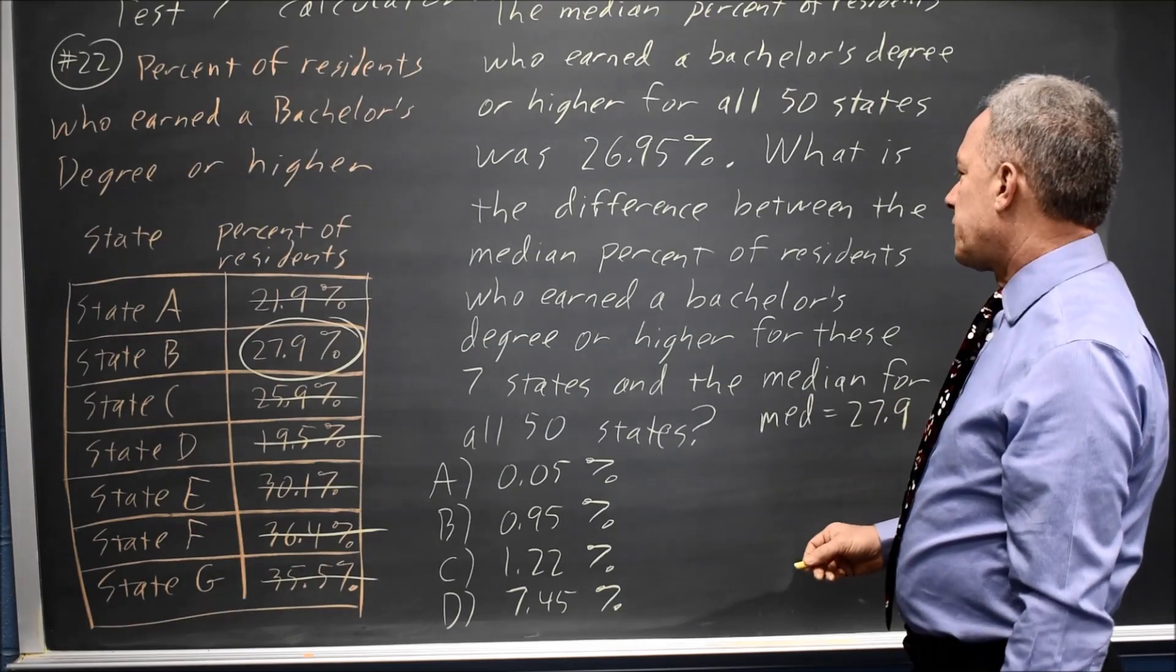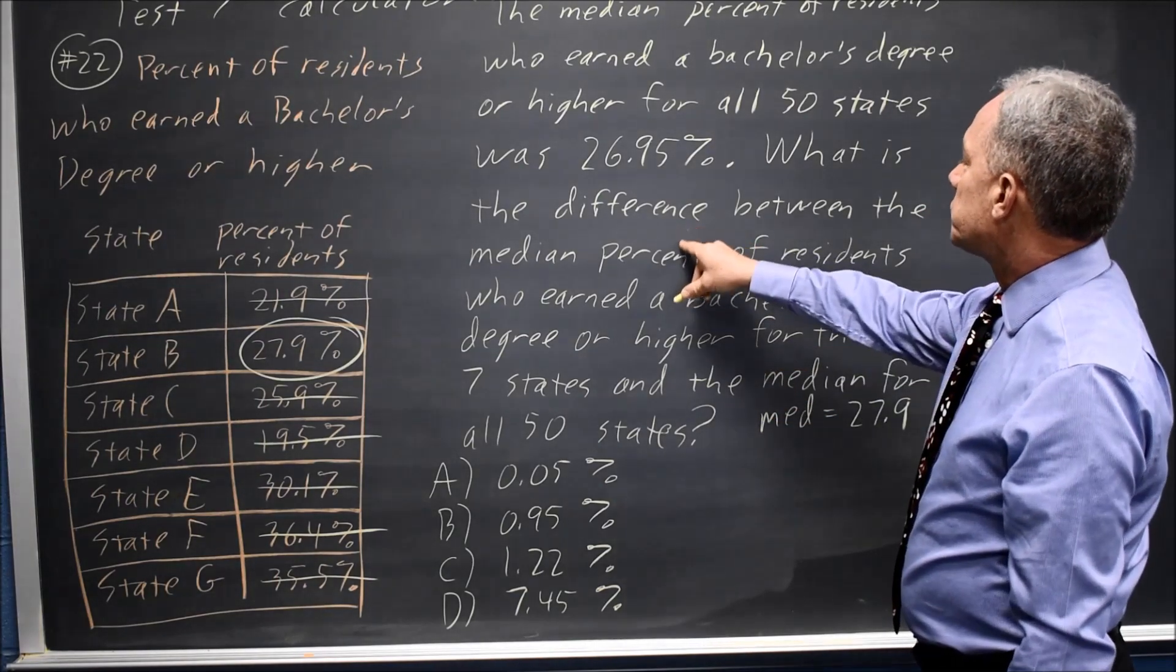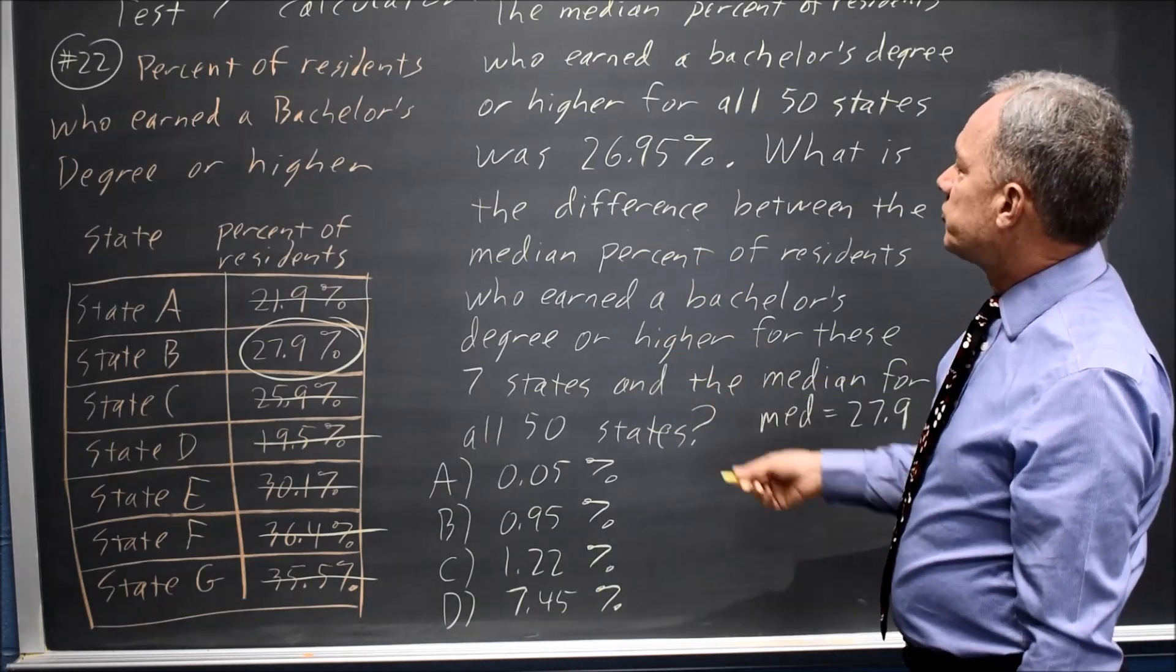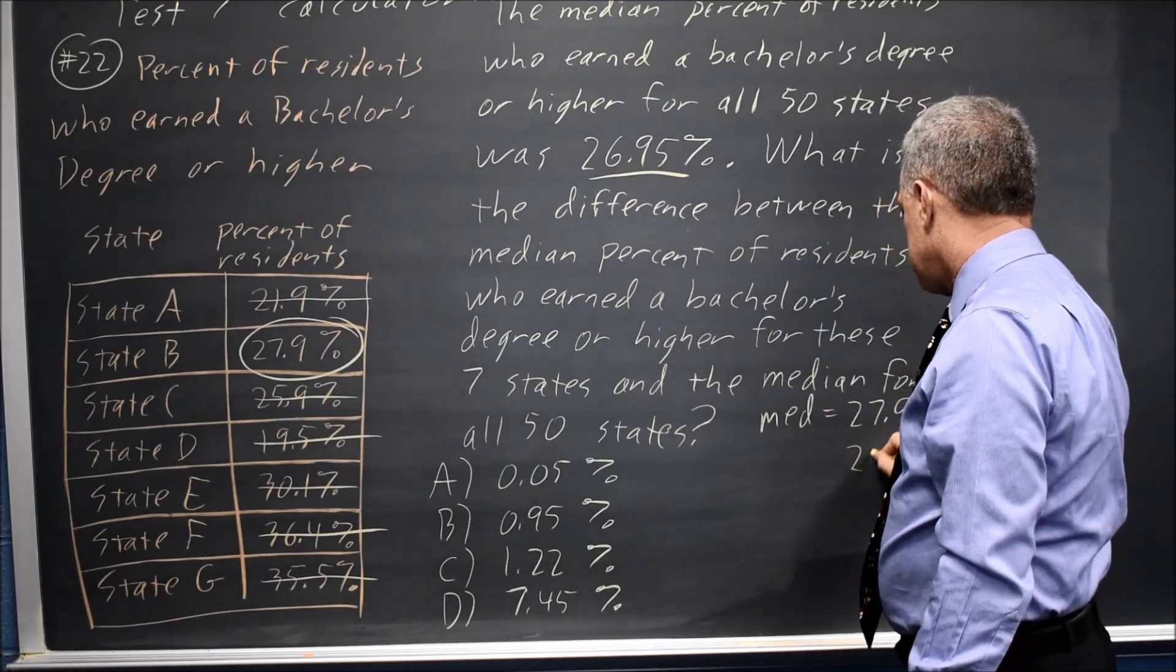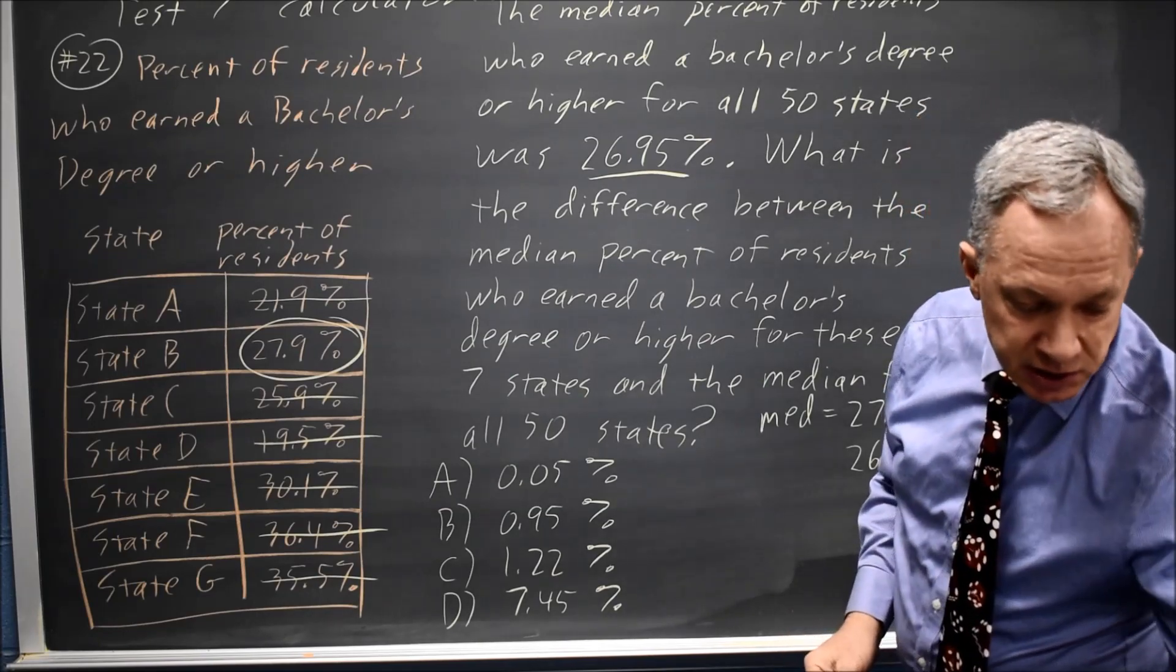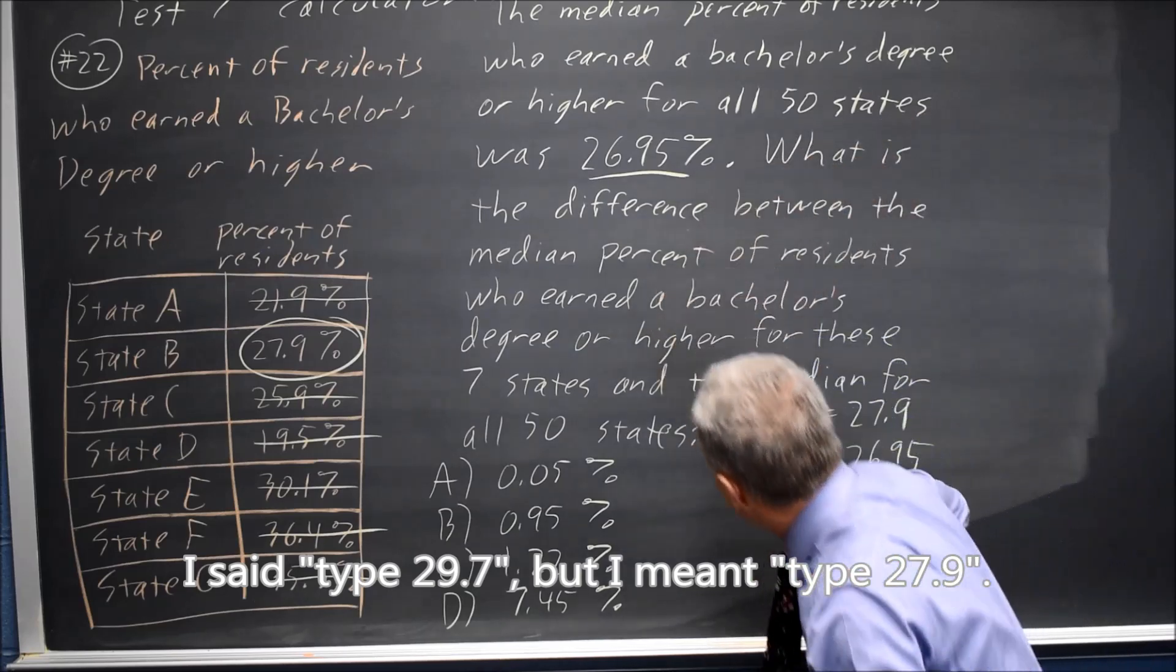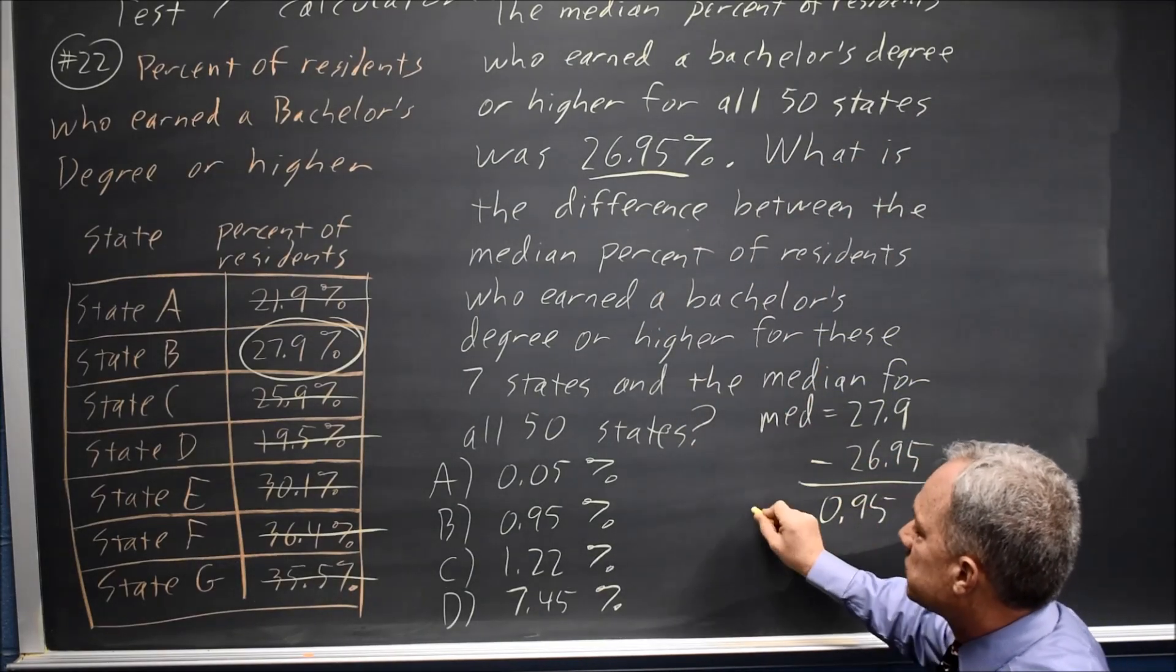College Board is asking for the difference between the median for these 7 states and the median for all 50 states, which was 26.95. This is a calculator question, so I can just type 27.9 minus 26.95, and I get 0.95, which is choice B.